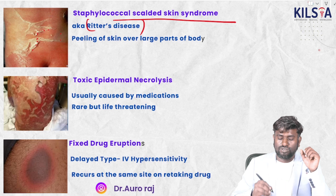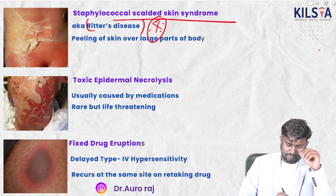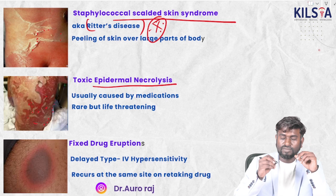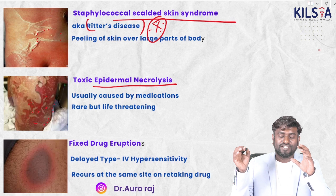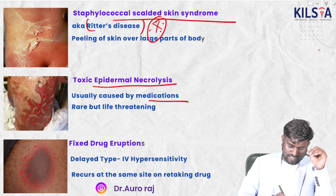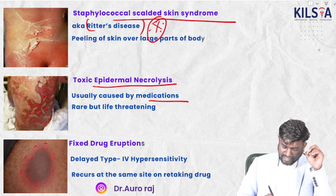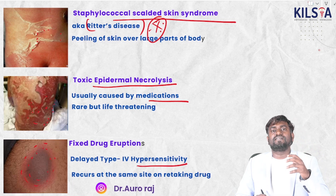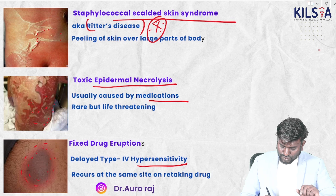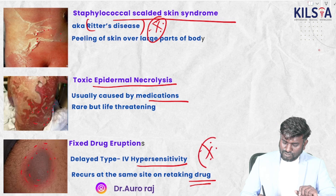Staphylococcal scalded skin syndrome is also called SSSS or Ritter's disease. This is a rare but potentially life-threatening condition. This next image is toxic epidermal necrolysis (TEN), which is usually caused by medications. This image shows fixed drug eruption, which is due to delayed type 4 hypersensitivity. Recurrence occurs at the same site when the patient takes the same drug again.